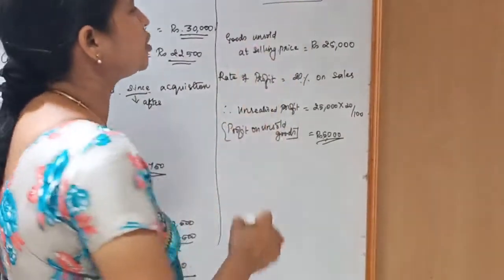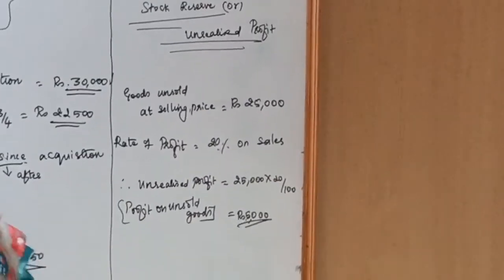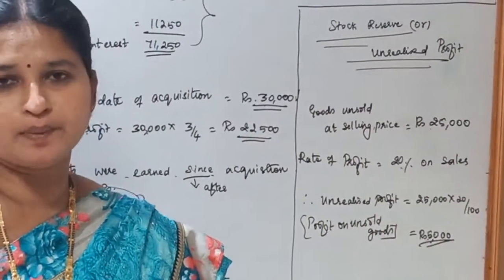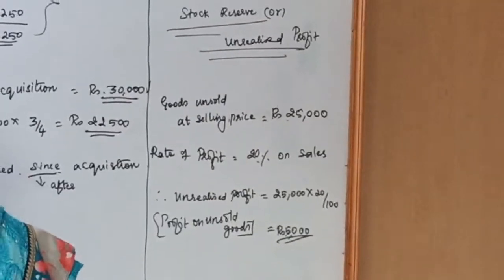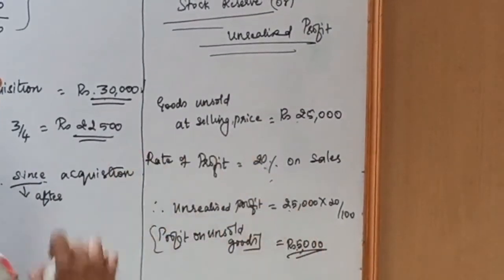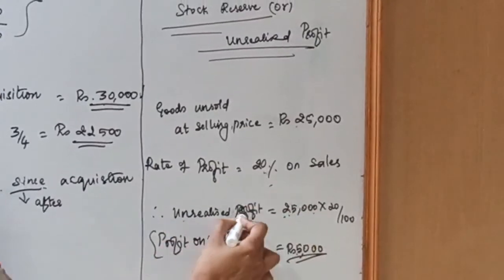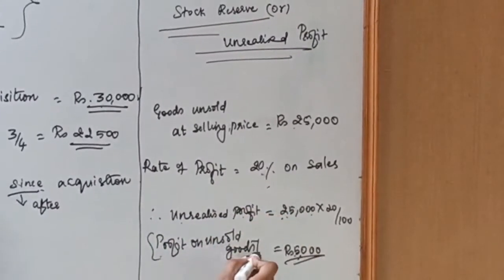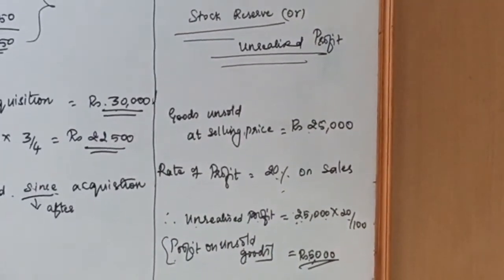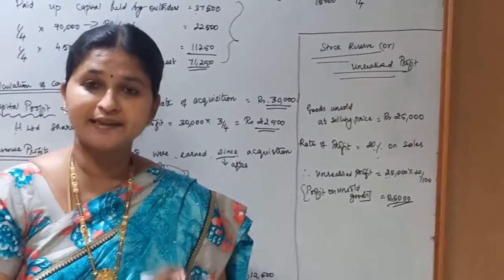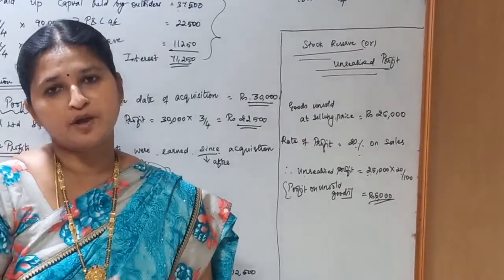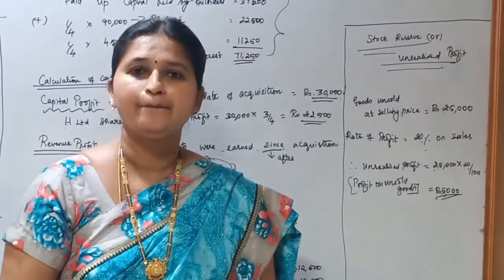Next, calculate the stock reserve or unrealized profit. Goods remaining unsold at selling price is Rs.25,000 and the rate of profit given is 20% on sales. Since the profit rate is directly given on sales, apply it directly: unrealized profit = Rs.25,000 × 20/100 = Rs.5,000. This stock reserve of Rs.5,000 must be deducted from stock on the asset side and from the profit and loss account on the liability side of the consolidated balance sheet.